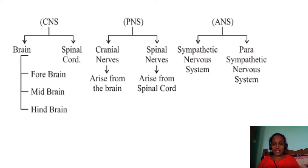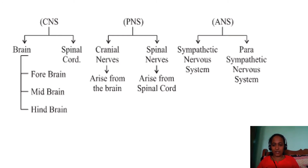The nervous system is classified into three major parts: CNS (Central Nervous System), PNS (Peripheral Nervous System), and ANS (Autonomic Nervous System). CNS includes the brain and spinal cord. PNS includes cranial nerves and spinal nerves. ANS includes the sympathetic nervous system and the parasympathetic nervous system.